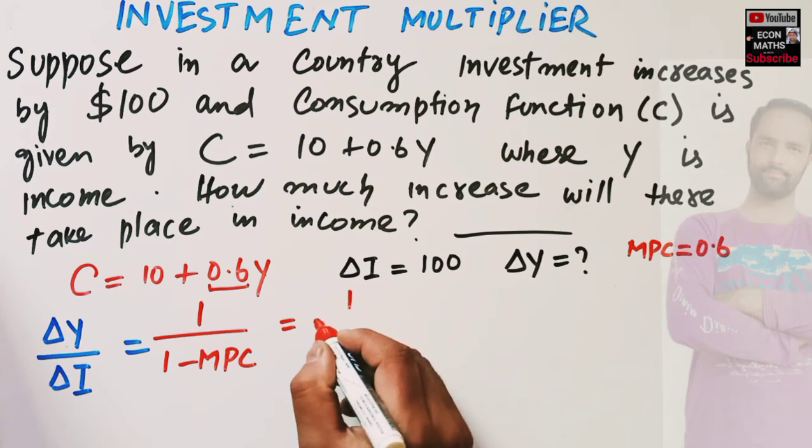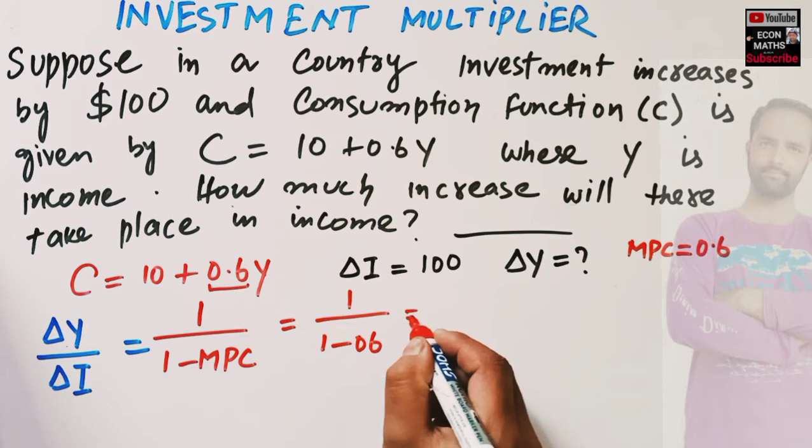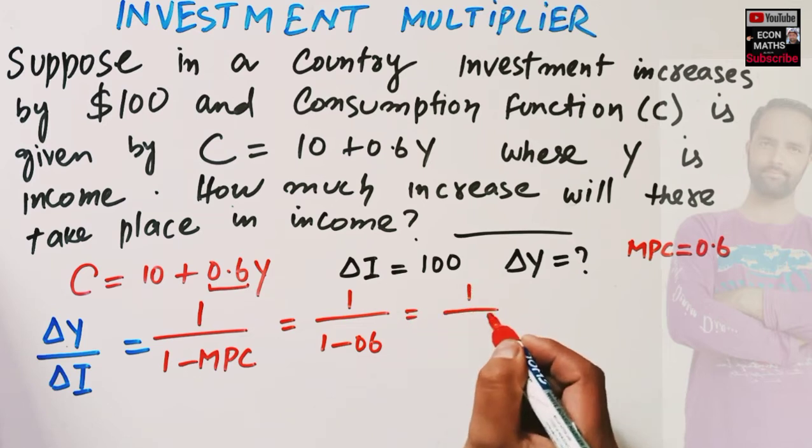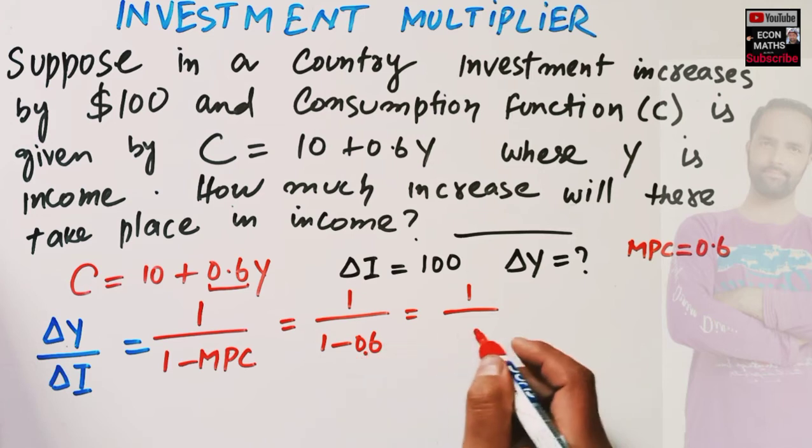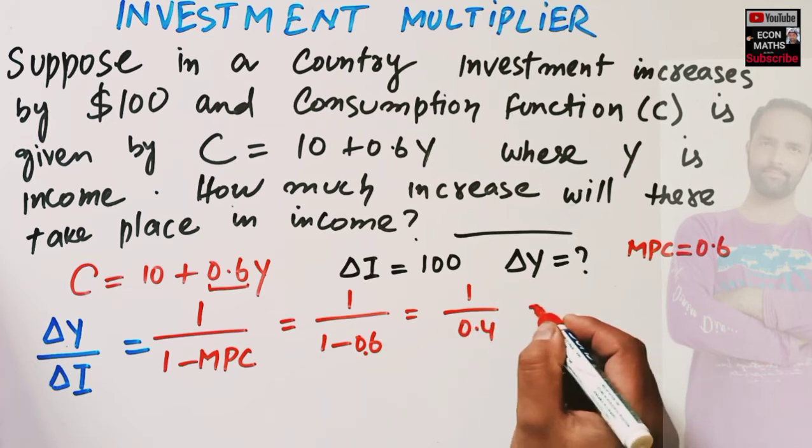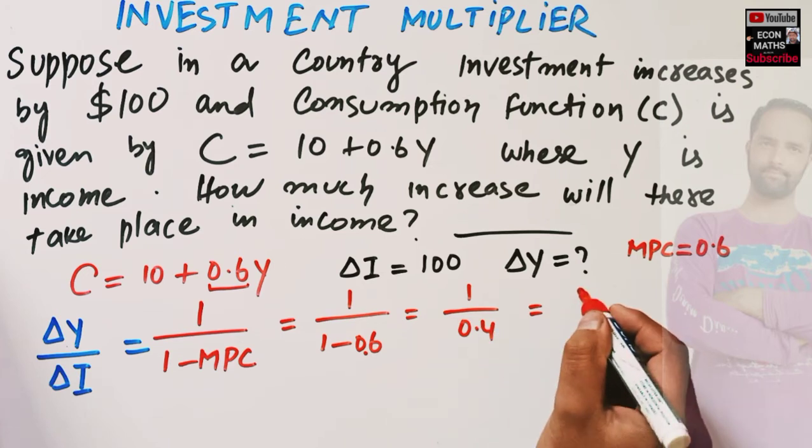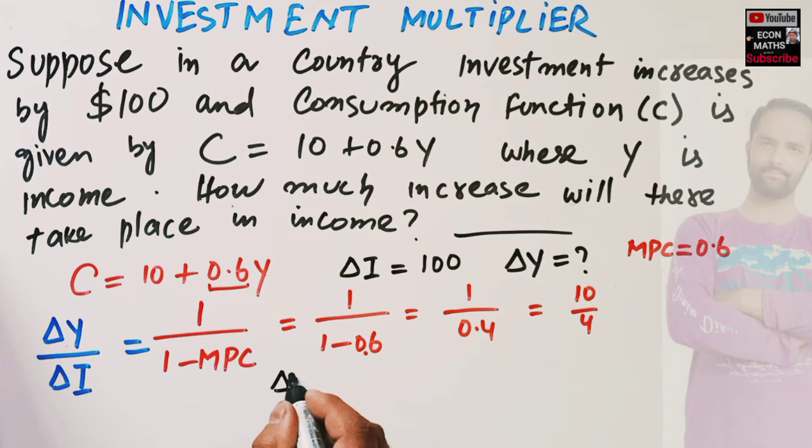So we will have 1/(1-0.6), it is 0.4, which comes out to be 4/10, it will become 10/4. That means our change in income with respect to change in investment is equal to 10/4.